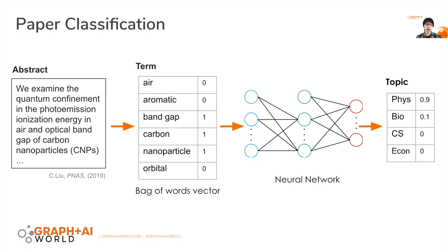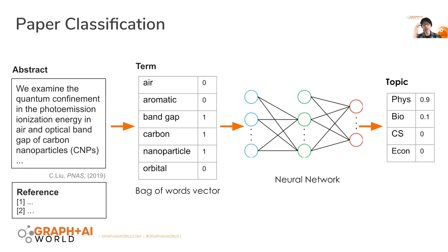This approach has been proven to work very well. But the question is: can we further improve it? Because we are not fully utilizing all the information we have. We also have reference information, and we know that the referenced papers are very likely to be of the same topic as this paper. So how can we combine these two pieces of information to further improve the accuracy of our model?